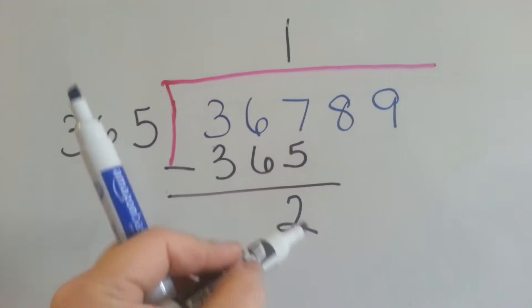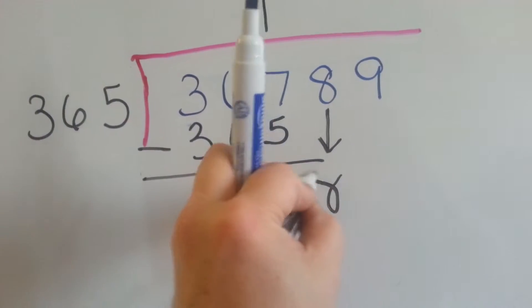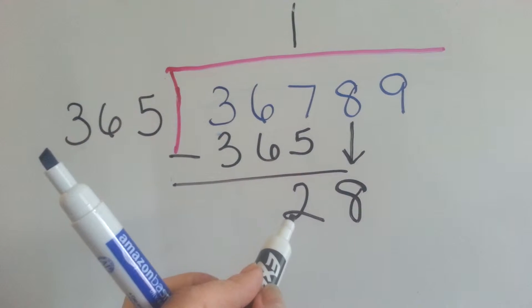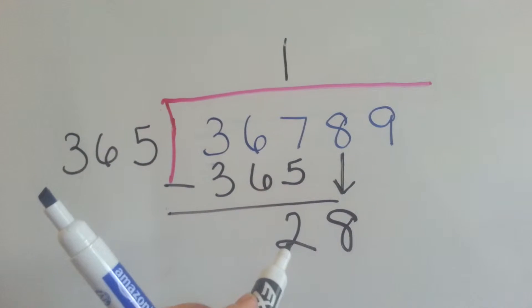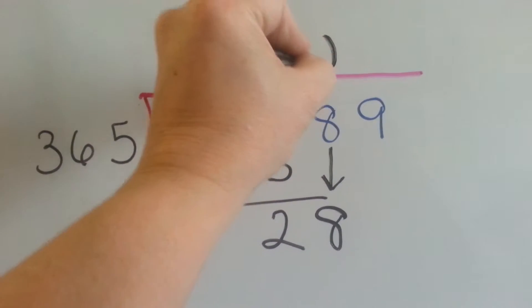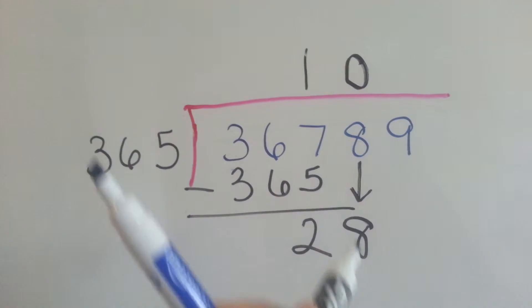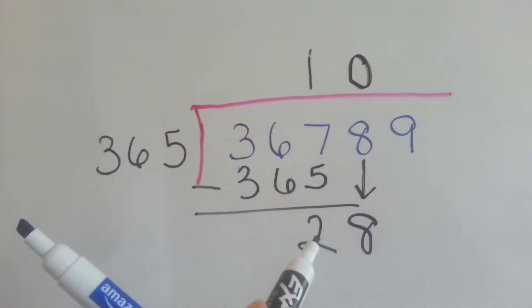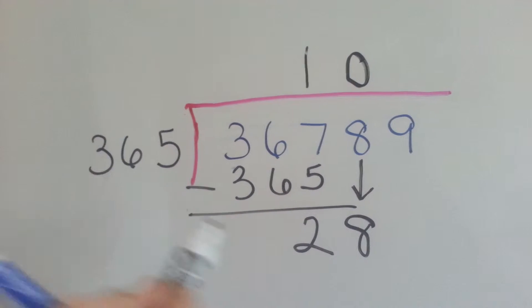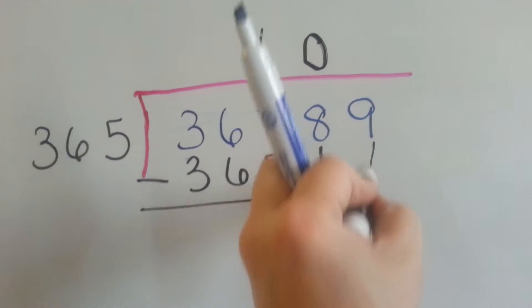So now it's the 8's turn to come down. So he's going to come down here, and we ask ourselves, can 365 fit into 28? No, it can't. So what we do in this case is, we give a 0 above here, because it fits in 0 times. We brought the 8 down, we tried to see if the 365 fit into it, and it didn't. It fits in 0 times. We put a 0 up here, and now it's the 9's turn to come down.